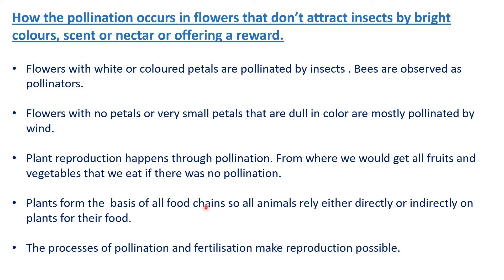Plants form the basis of all food chains. All animals rely either directly or indirectly on plants for their food. Plants are the main source of the food chain. The process of pollination and fertilization makes reproduction possible. Because of pollination — by the wind or by bees — the pollen gets to the ovary, and fertilization happens. Because of pollination and fertilization, reproduction is made possible.